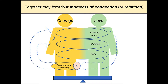The fourth moment of connection is the most complicated one to describe. This fourth moment starts with the response of the loving person — the courageous person has done something, and then the loving person responds with providing safety, validating, and giving. So now the question is: how does the courageous person respond to the loving person's response? The courageous person engages in what we're calling accepting and connecting. There's an arrow from accepting and connecting back into the heart of the courageous person, because accepting and connecting is, in fact, a really courageous thing to do — it's hard for most of us.